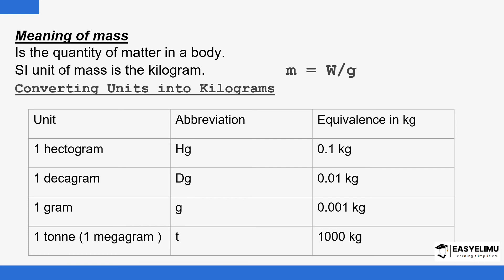Mass is basically the quantity of matter in an object, in a body, and it is measured in kilograms. Mass uses the symbol M, and kilograms uses the symbol KG.